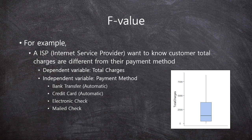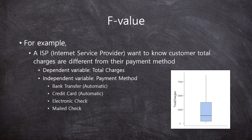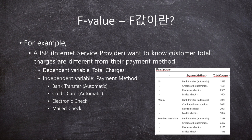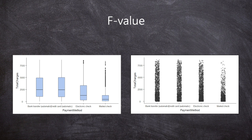Let's look at our example used in a prior video. An internet service provider company wants to know whether customer total charges differ by payment method. The dependent variable is total charges — the amount of money paid by customers. The independent variable is the payment method, with four groups: bank transfer, credit card, electronic check, and mail check. Here we have graphs of total charges, a boxplot, distributions, and descriptive statistics. The sample size is around 7,000 and the mean is around 2,000. We have detailed descriptive statistics for the four groups, along with a boxplot and distribution plot from Jamovi.